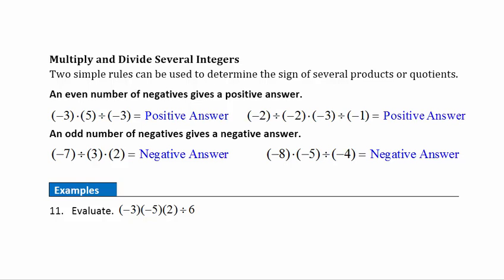Multiplying and dividing several integers: two simple rules determine the sign of several products or quotients, or a combination of the two. The first rule: if we have an even number of negatives in our list of things being multiplied together, we're going to end up with a positive answer. Every time we pair up two negatives, we get a positive, so if there's an even number they all get paired up.